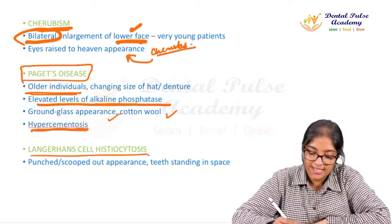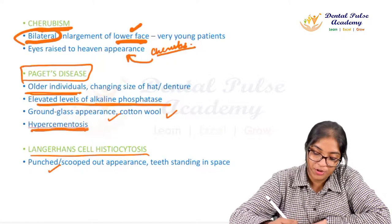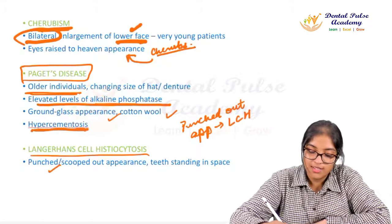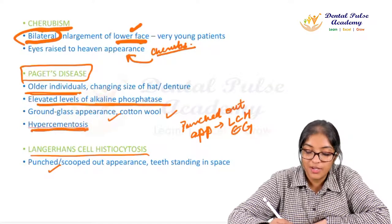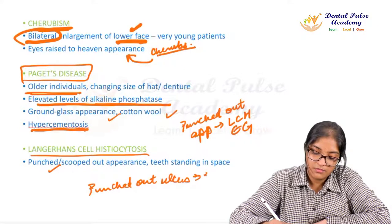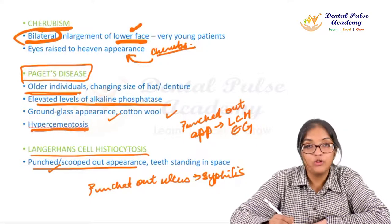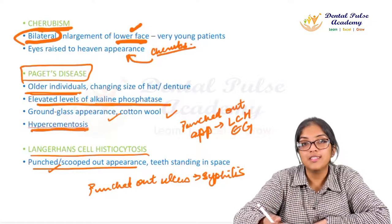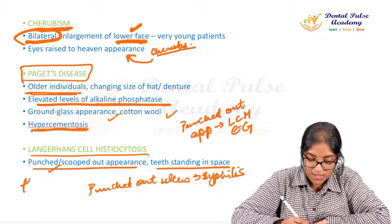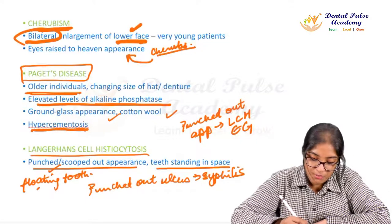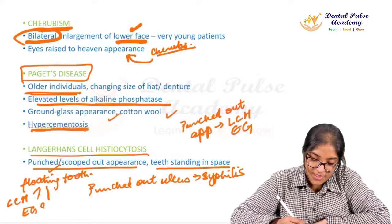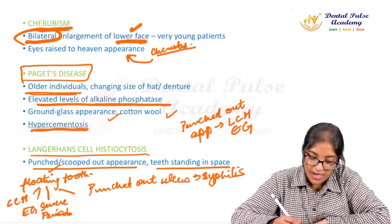Langerhans cell histiocytosis presents with a punched-out or scooped-out appearance in bone — the bone around the area appears completely scooped out, giving teeth a floating in space appearance. Floating tooth appearance is seen in Langerhans cell histiocytosis, eosinophilic granuloma, severe periodontitis, or malignancy. Punched-out ulcers in soft tissue are associated with syphilis.